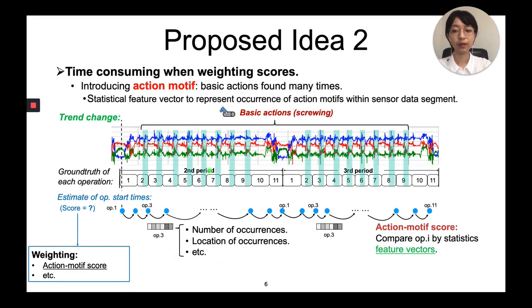While in this research, we introduced the action motif score. The action motif corresponds to some basic actions that appear several times in each period, and can be tracked in the similar way as the period motifs. We calculate statistic features for these basic actions and represent each operation using feature vectors. And Euclidean distance is calculated for comparing these operation similarities.